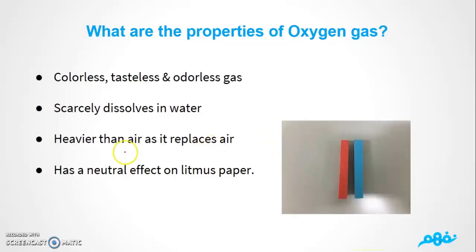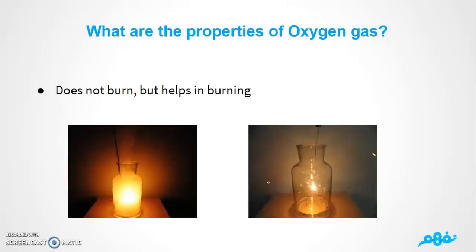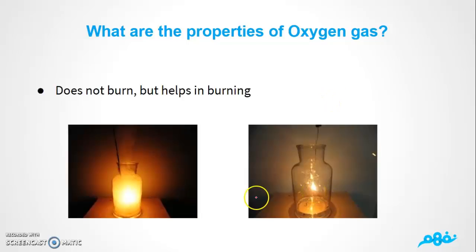You should also know that oxygen gas is heavier than air. And finally, it has a neutral effect on litmus paper — it does not turn red litmus blue or blue litmus red. One of the main properties of oxygen is that it does not burn but it helps in burning. Oxygen supports combustion.